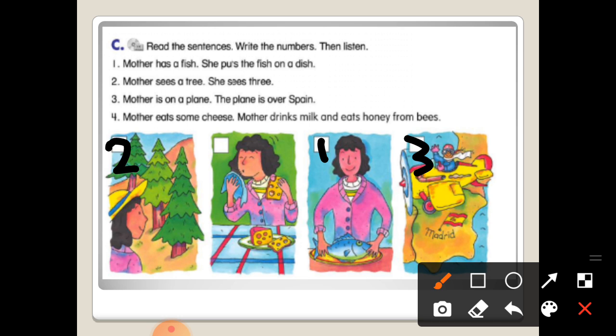Number three: mother is on a plane, the plane is over Spain. I think number three. The last one: mother eats some cheese, mother drinks milk and eats honey from bees. Again, mother eats some cheese, mother drinks milk and eats honey from bees. Number four. Okay.